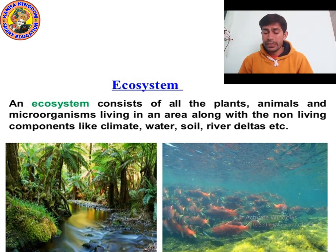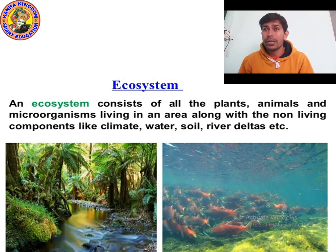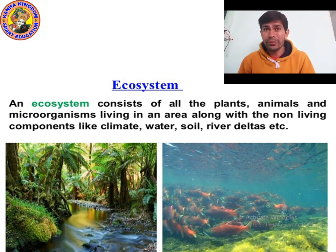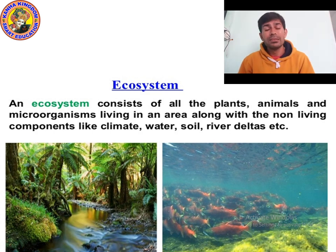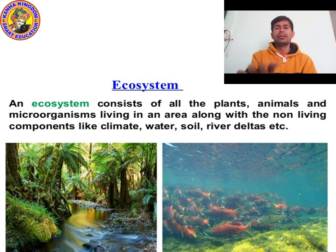The full definition of ecosystem: an ecosystem consists of all the plants, animals, and microorganisms living in an area along with non-living components like climate, water, soil, rivers, and deltas. In short, we can say: an ecosystem is a system made up of living and non-living things. Now let's study migration.